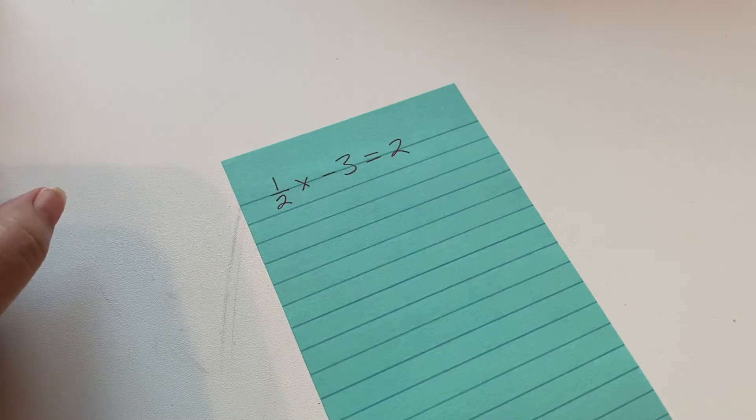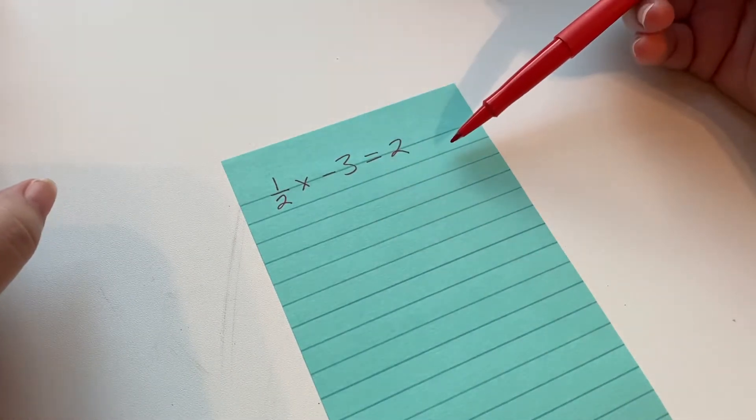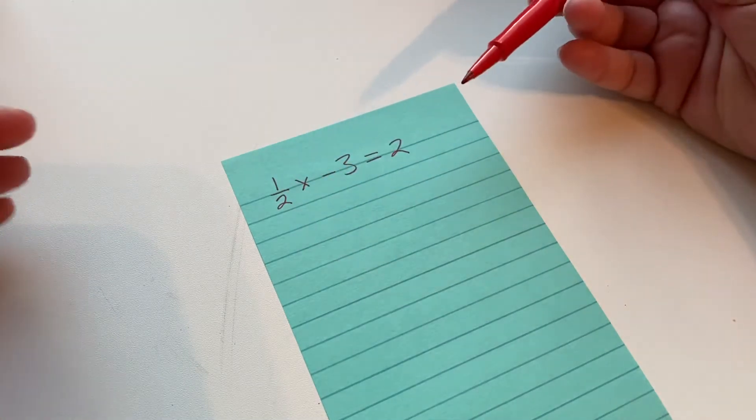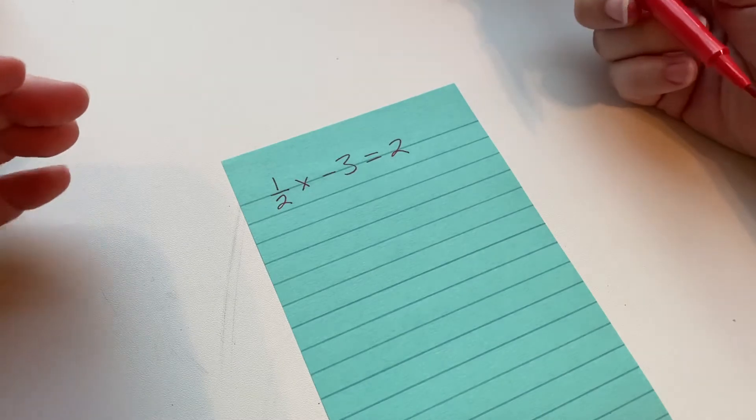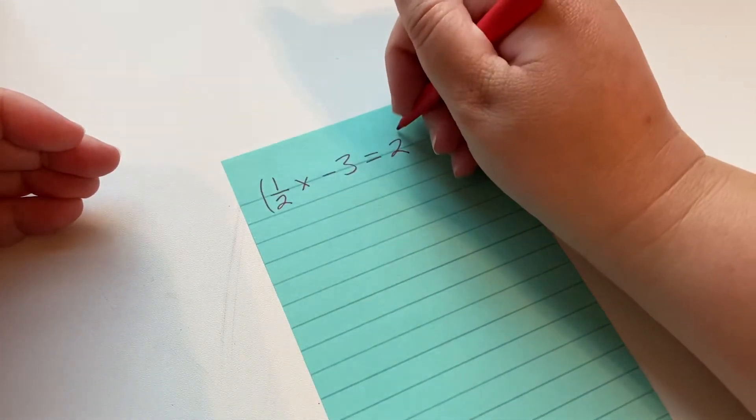In this case we've got half of x minus 3 equals 2. If we want to get rid of the fraction there's something we can do. You could solve it without getting rid of the fraction but in my experience most people don't really love fractions. So let's eliminate the fraction.